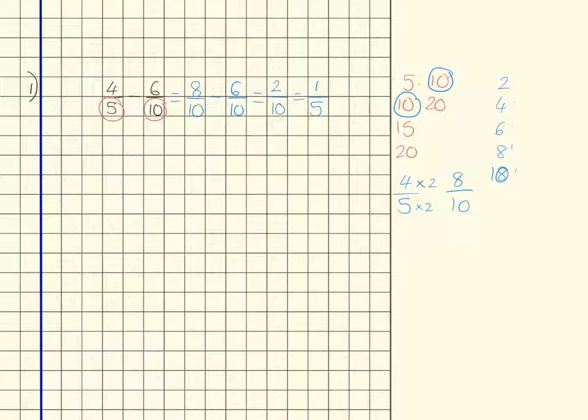Okay, so the next question that we are doing is 2 thirds take away a half, so we're looking this time at denominators which are 3 and 2, so we're trying to find a common multiple of 3 and 2.